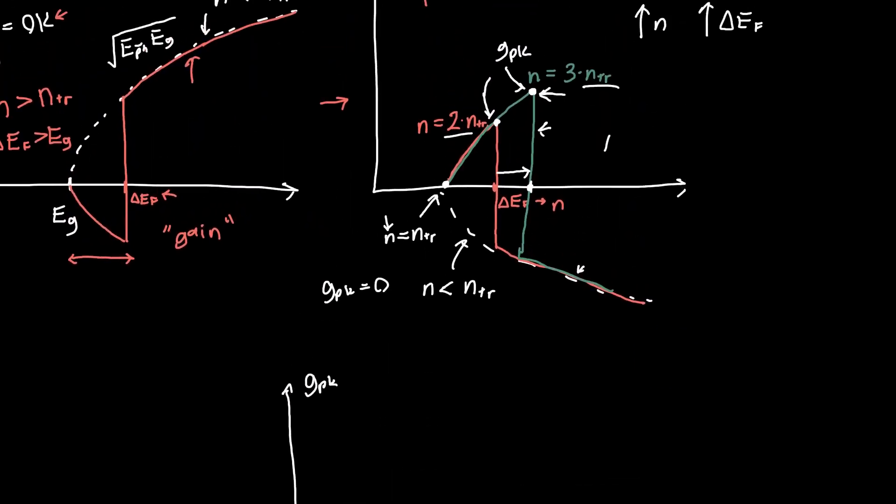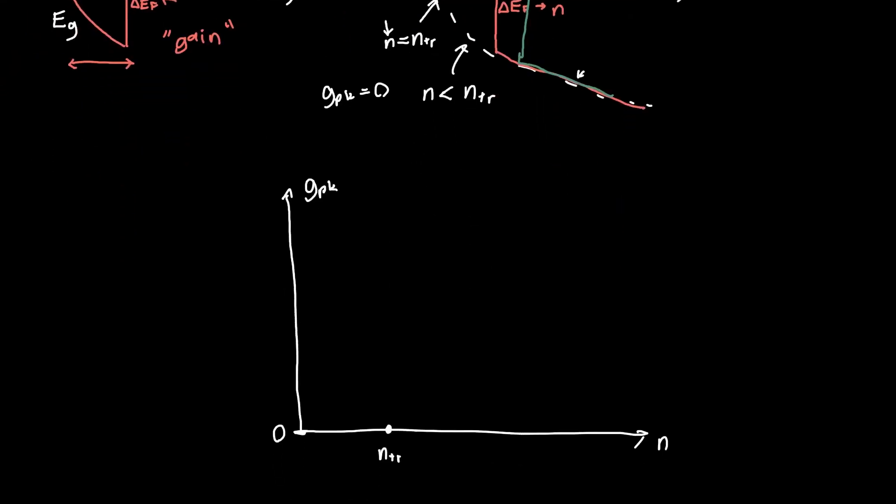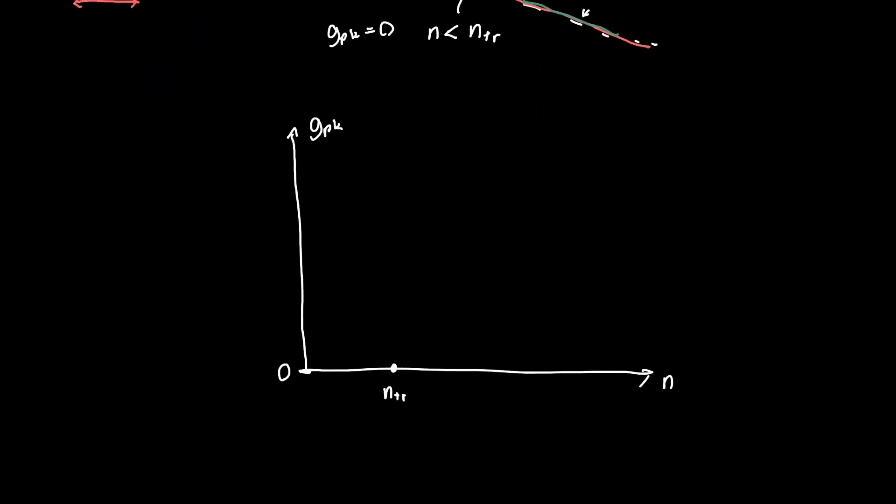And you can actually plot this, but it would be kind of hard because you'd probably need to do it numerically. Because we saw in previous videos, in order to just determine the transparency carrier density, you need to do some fairly complex numerical stuff. So to determine what the gain is at something that's not the transparency carrier density is exceptionally difficult, but if you plot it, it'll look something like this.